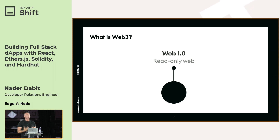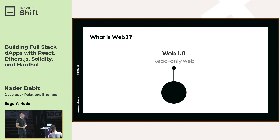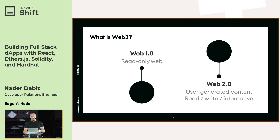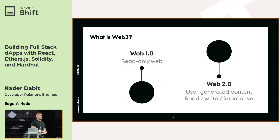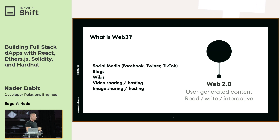Web1 is referred to as the early edition of the Internet, from when it was first created until maybe around 2004. Web1 was like a read-only web — it wasn't something the average person could participate in other than as a consumer. If you wanted to build or create something, you had to be a developer. Around 2004, we started seeing applications that allowed elegant solutions for user-generated content: wikis, social networks, Facebook, Instagram.